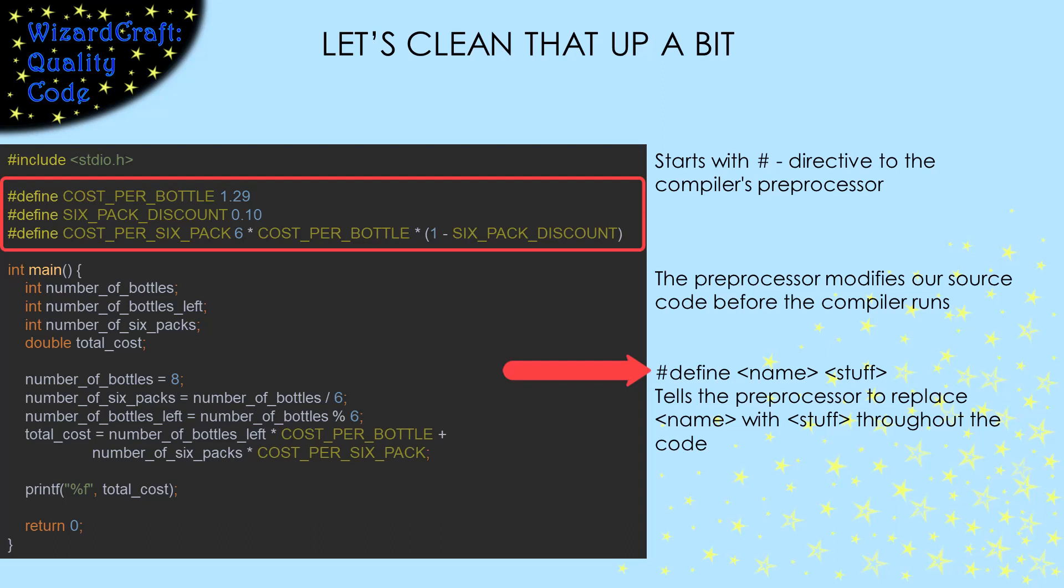And they tell the preprocessor, every time you see name, replace it with stuff. So this says, every time you see cost per bottle, replace it with 1.29.